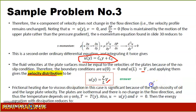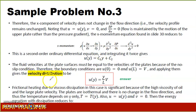Using this equation we can solve for the velocity at any particular point. When y = 0 the velocity is 0, and when y = L the velocity is 12 m/s. Frictional heating due to viscous dissipation is significant here because of the high viscosity of the oil and the large plate velocity. The plates are isothermal and there is no change in the flow direction, so temperature depends only on y.